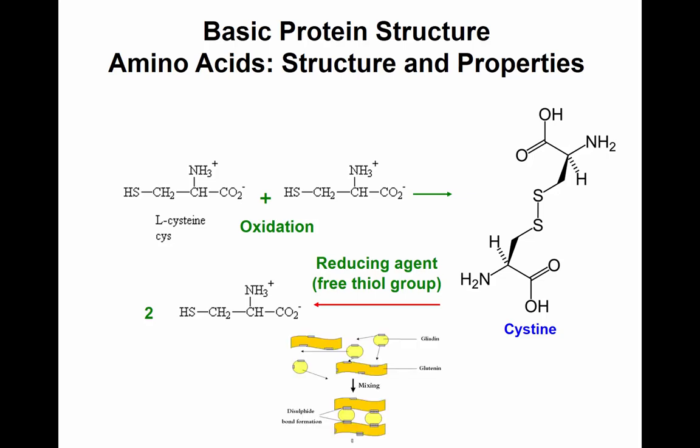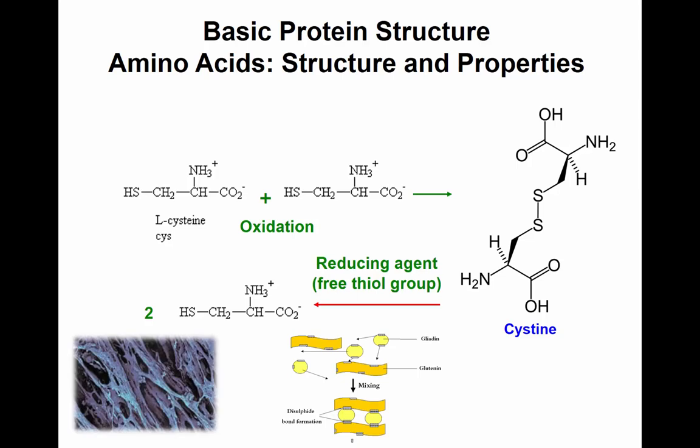One example is gliadins and glutenins, the proteins in wheat. You take flour, add water, and start kneading. You're denaturing the gliadin and glutenin, opening them up and making them more pliable above the glass transition. The SH groups from each protein become exposed to other SH groups, and you start forming disulfide bonds — one of the stabilizing molecular interactions of the gluten network.